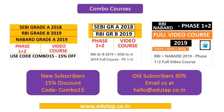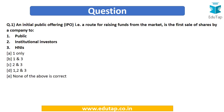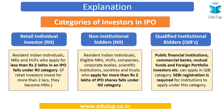Let's start with the first question. An initial public offering, or IPO, is a route for raising funds from the market and is the first sale of shares by a company to the public, institutional investors, or HNIs. This question asks: via an IPO, the company is raising funds from which of the following? Options are: (1) only one, (2) one and three, (3) two and three, (4) one, two and three, or none of the above.